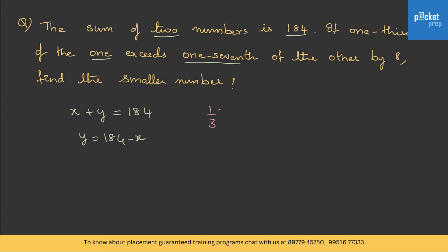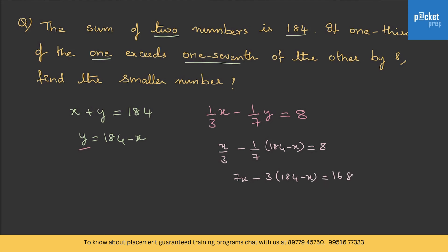It is said that one third of x exceeds one seventh of y by 8. When they say 'exceed,' we take the difference, and the result is 8. Substituting y = 184 - x into the expression: x/3 minus (1/7)(184 - x) = 8. This gives 7x - 3(184 - x) = 168, so 10x = 720, or x = 72.